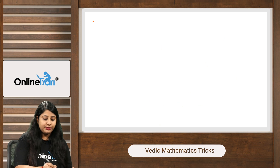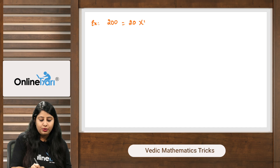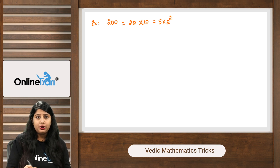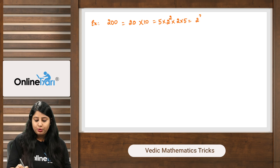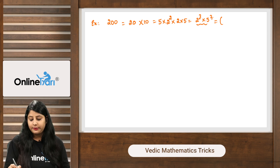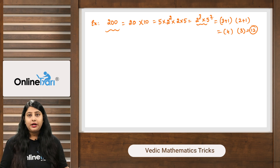Let's try a bigger number: 200. Write 200 = 20 × 10. Then 20 = 5 × 4 = 5 × 2², and 10 = 2 × 5. So 200 = 2³ × 5². Powers are 3 and 2. Add 1 to each: 4 and 3. Multiply: 4 × 3 = 12. So 200 has 12 total factors.